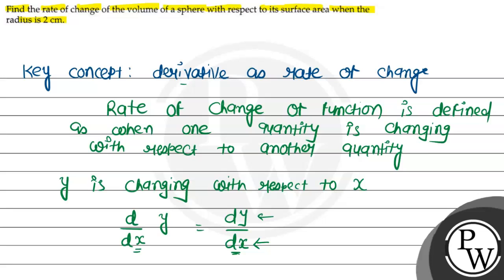So here, the rate of change of volume of the sphere with respect to surface area of the sphere is required. The value is also given — the radius is 2 cm.